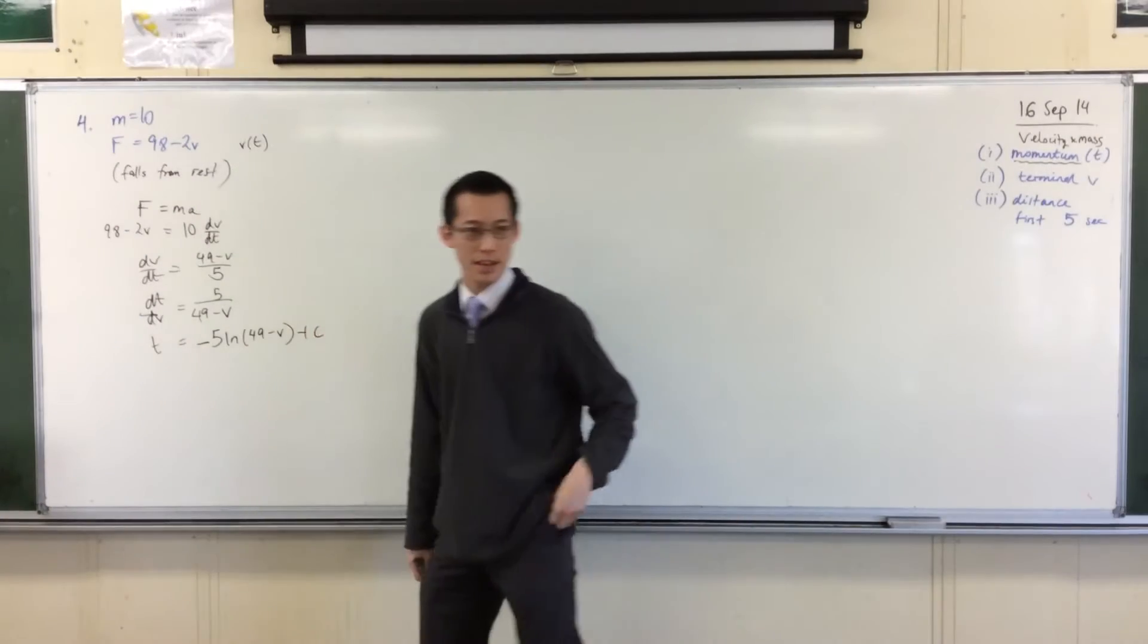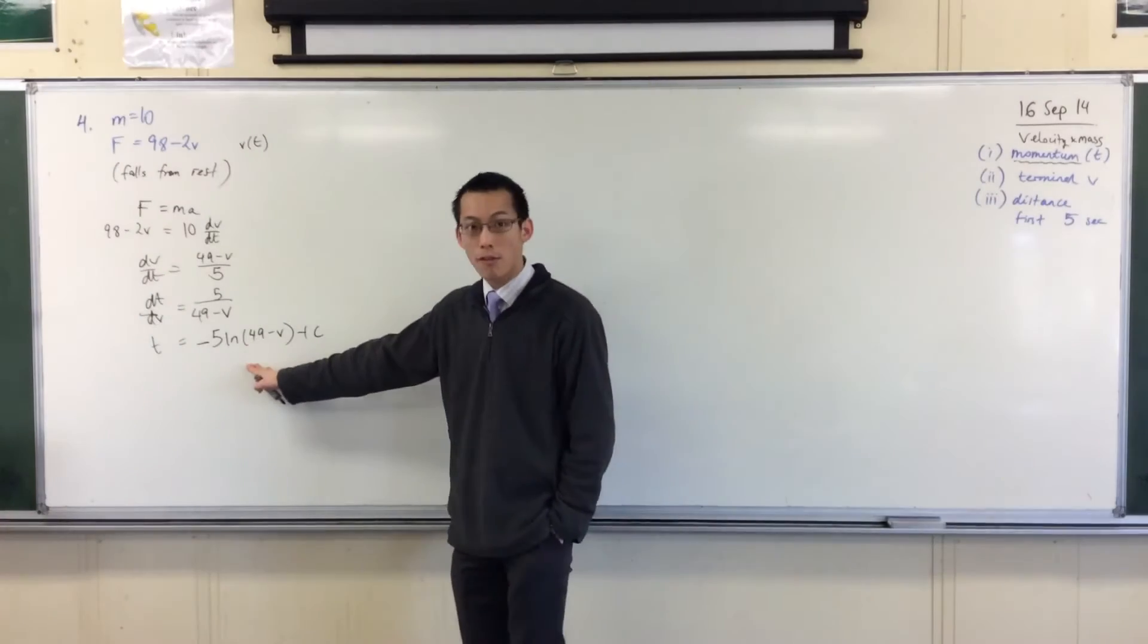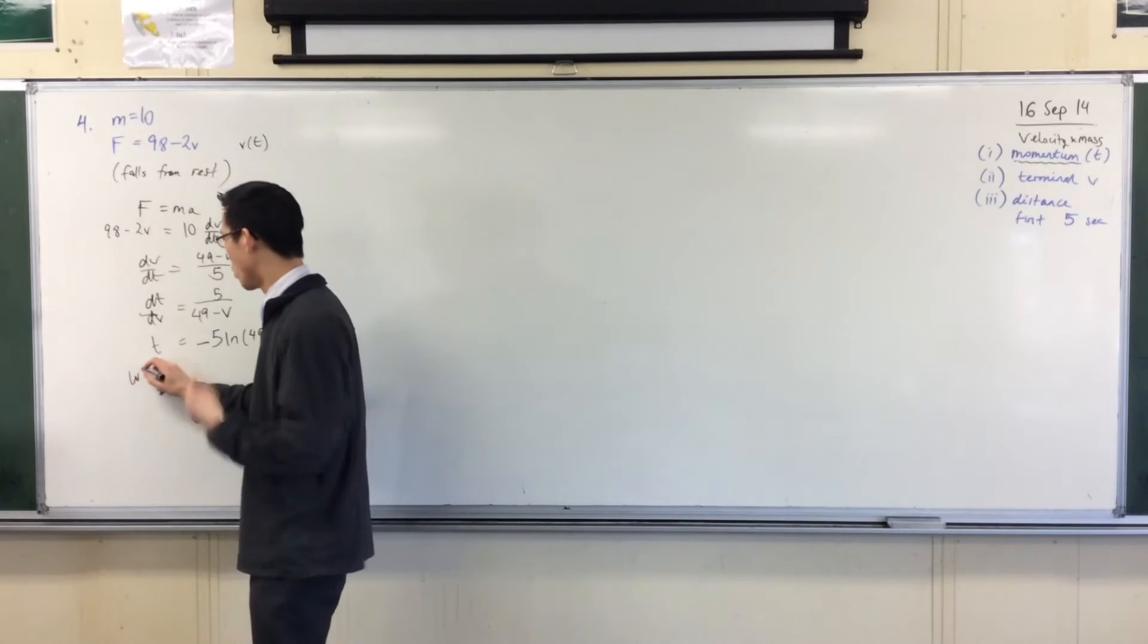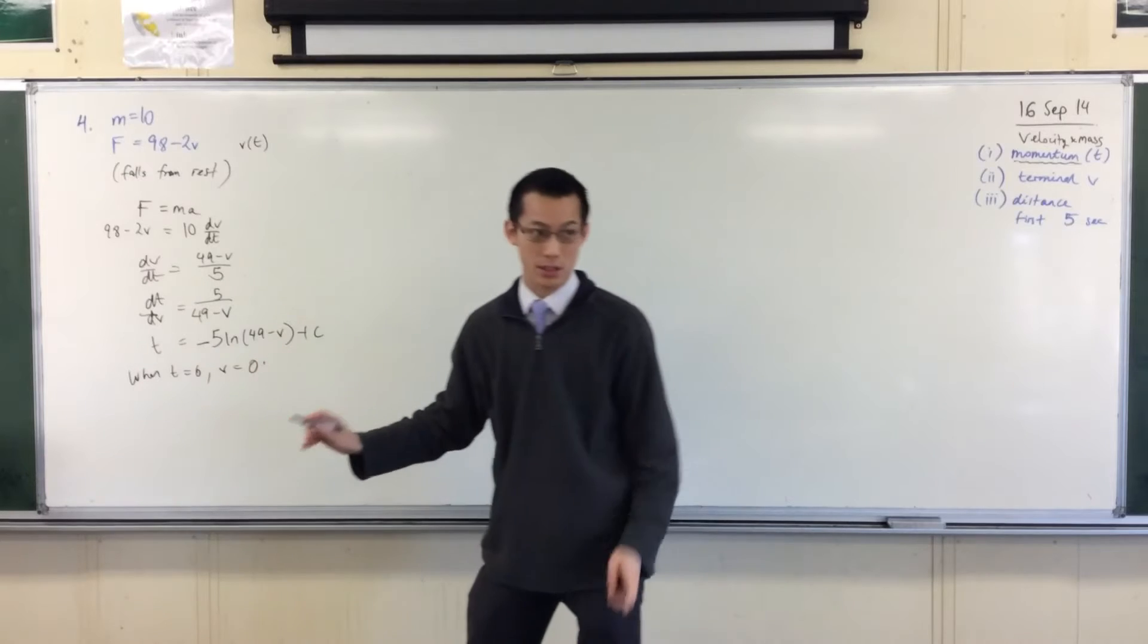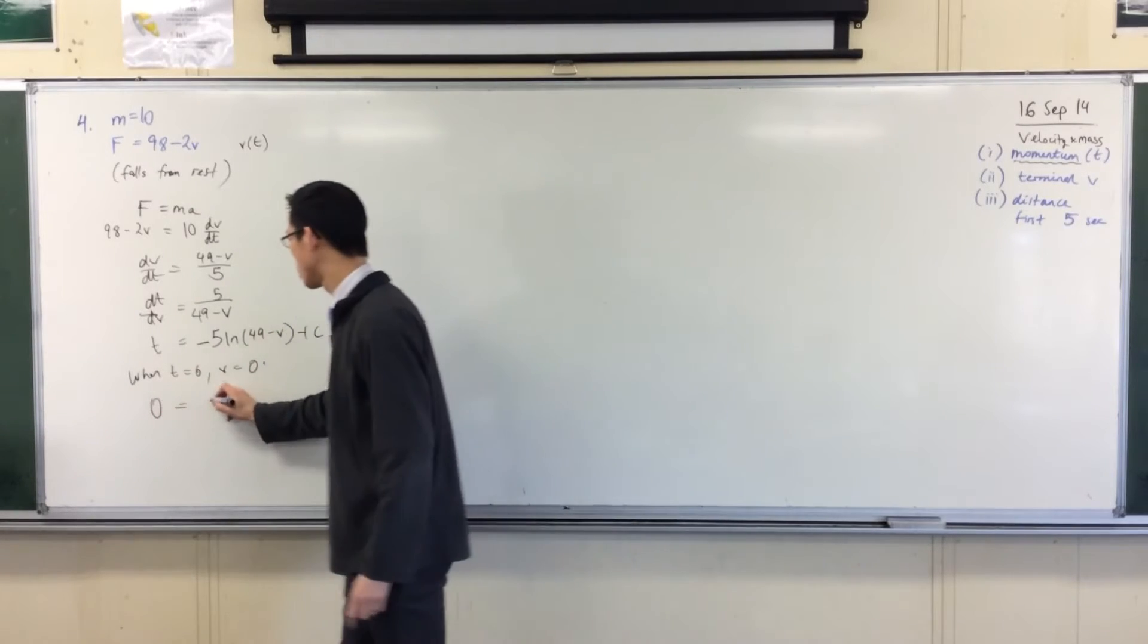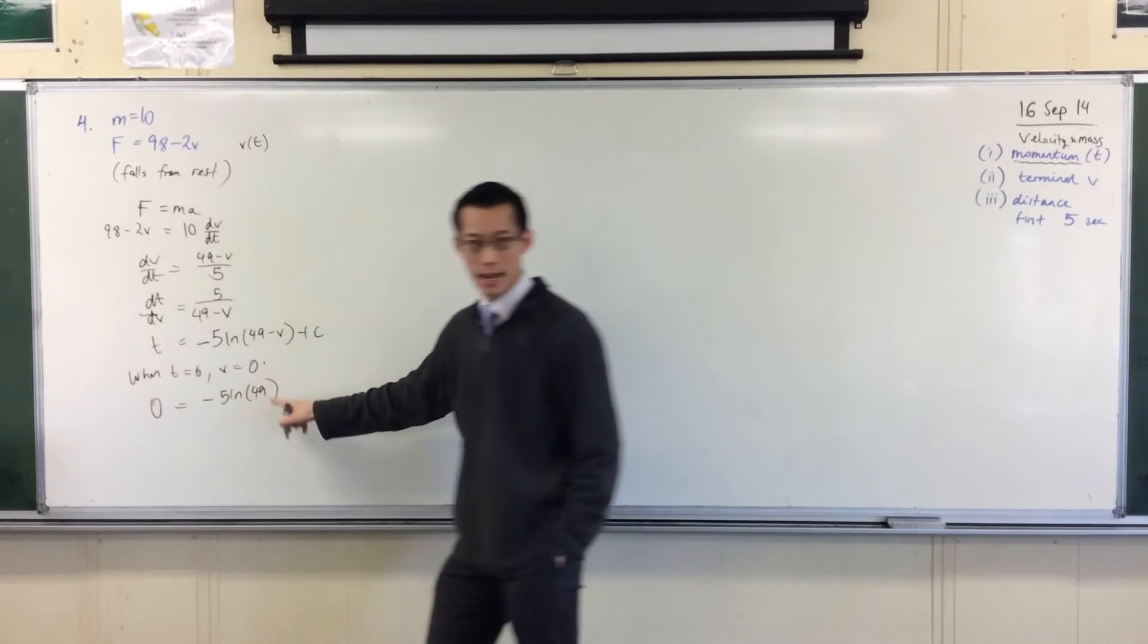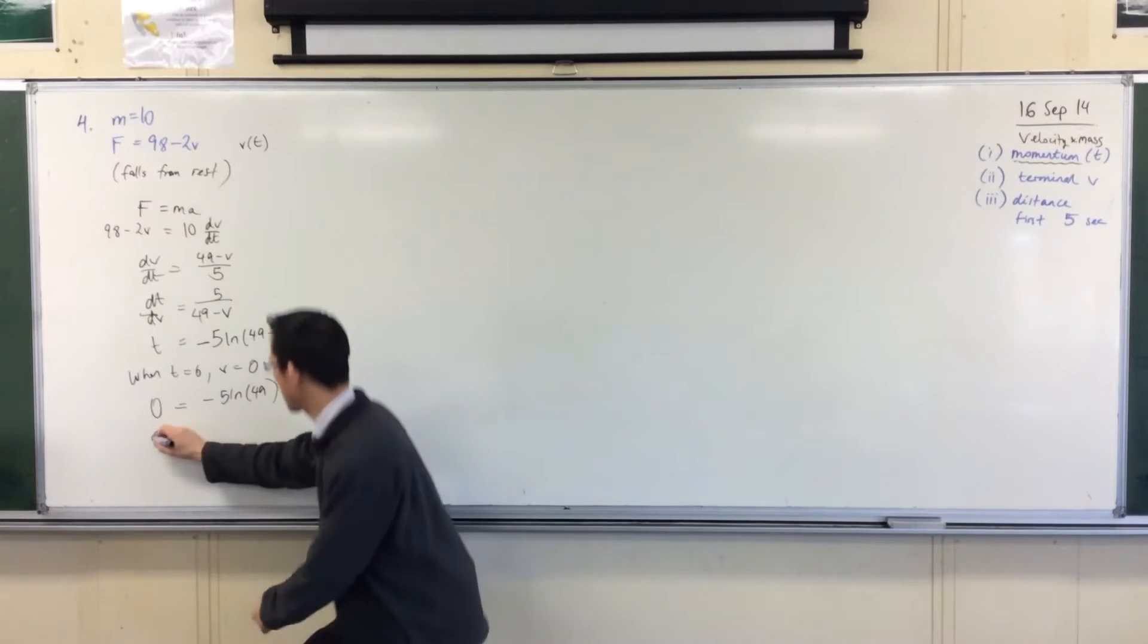Plus a constant. Good, because it's indefinite, right? So you've got to find your constant. It's not trivial to find the constant, because you have this log function in there. So you have to say, from rest, right? When, excuse me, t equals 0, v equals 0, because it's from rest. So you punch that over your thing, you get 0 equals minus 5 log 49, right? There's v equals 0. Plus my constant, so there's my constant.